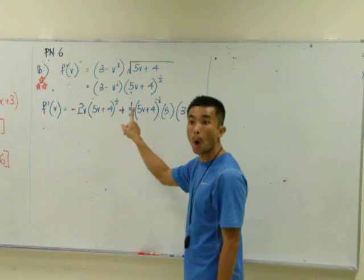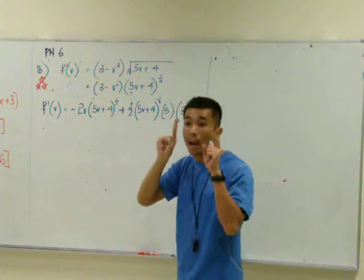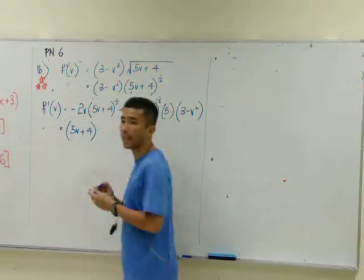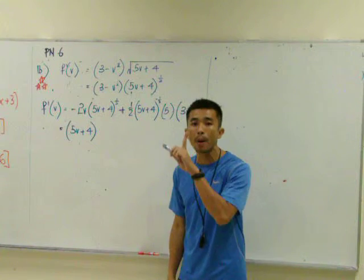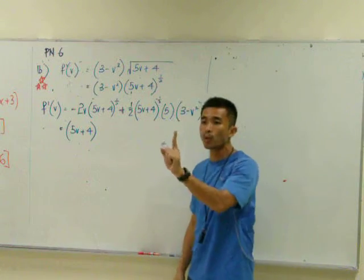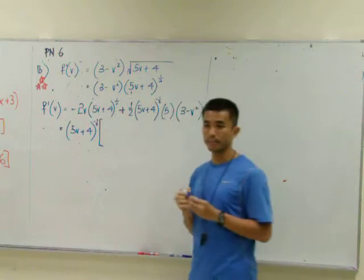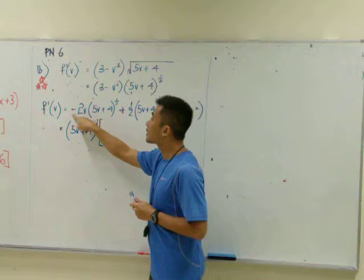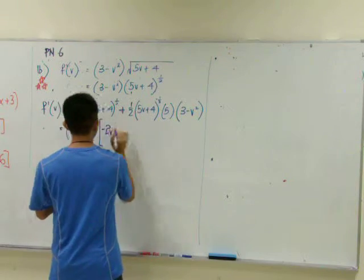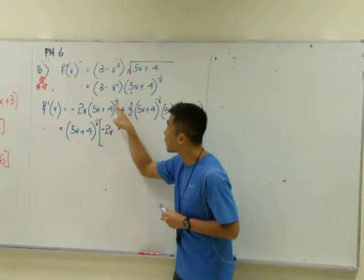That is the only common bracket. When we take out the common bracket, we take out with the one with bigger power or smaller power? Smaller. Half and negative half, which one is smaller? Negative half. What is inside here? We continue writing minus 2V.